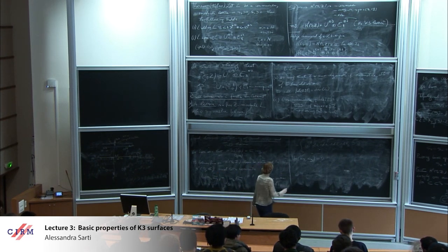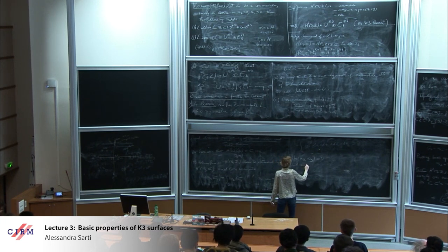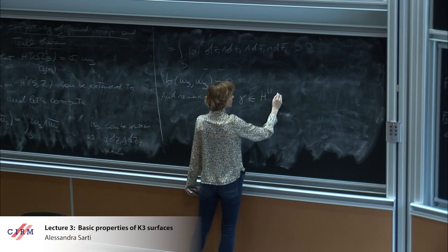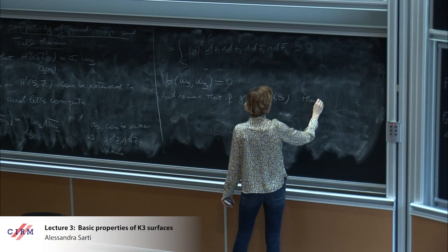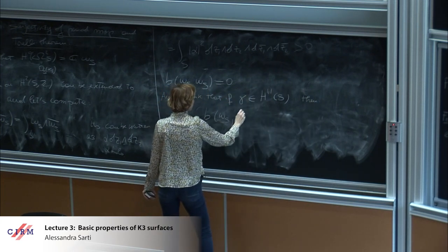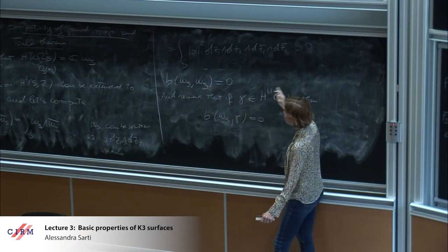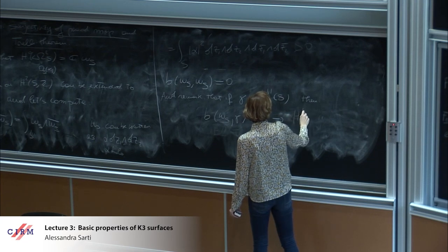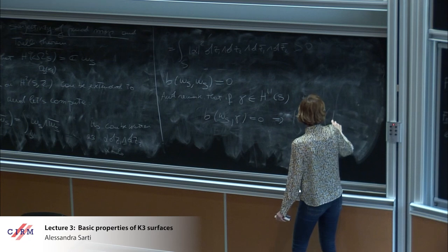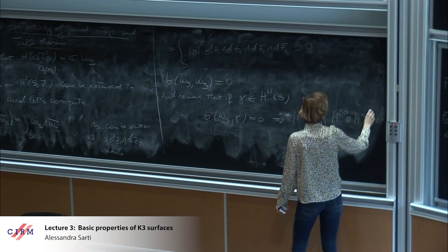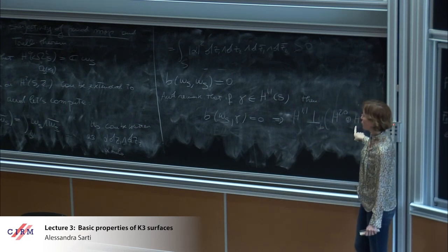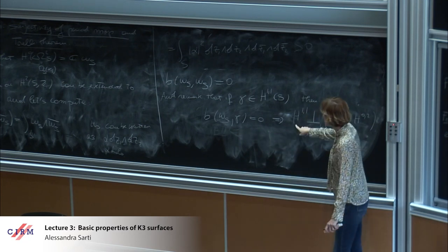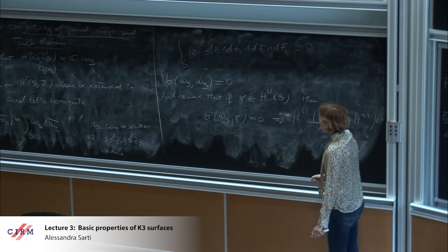Also, if gamma is in H^{1,1}(S), a (1,1)-class, then B(omega_S, gamma) = 0 — just write down in dz1 ∧ dz2 bar, etc., and you see it's zero. This implies that H^{1,1} is orthogonal with respect to the bilinear form to H^{2,0} ⊕ H^{0,2}, but H^{2,0} and H^{0,2} are not orthogonal to each other.